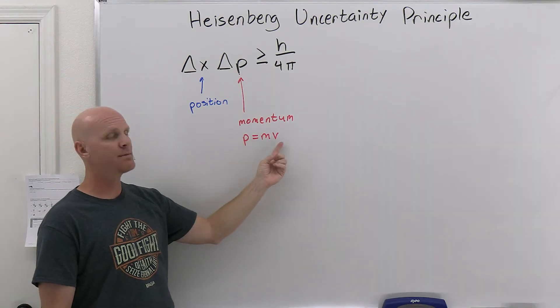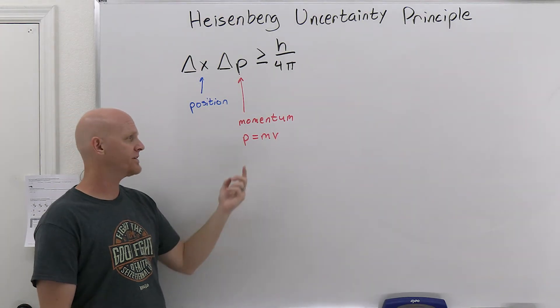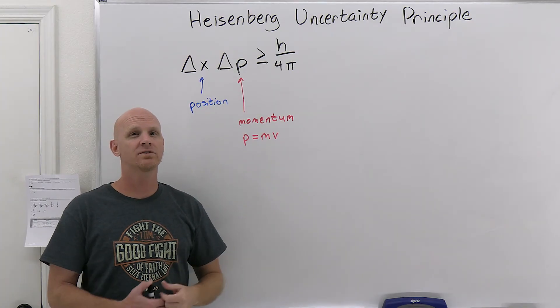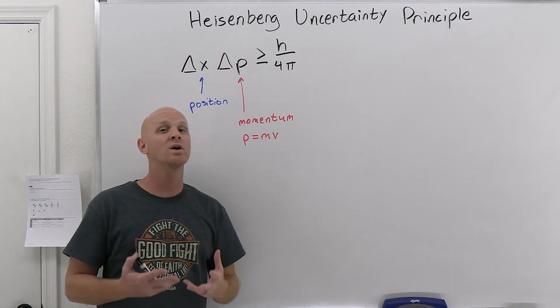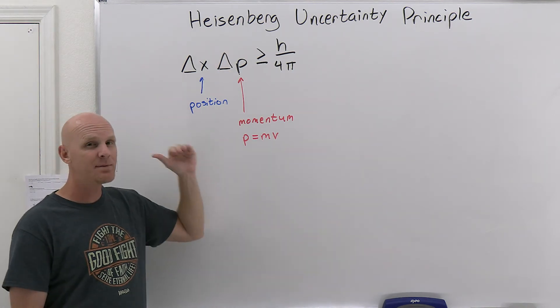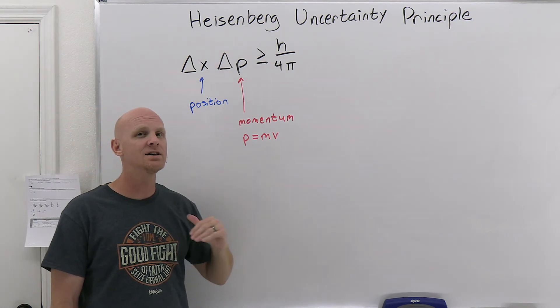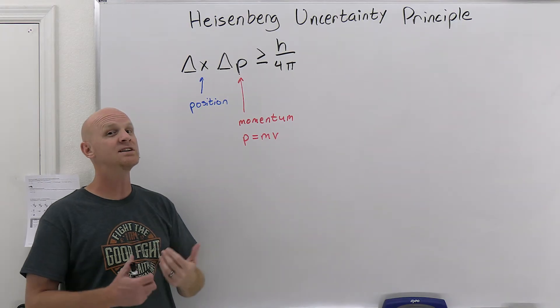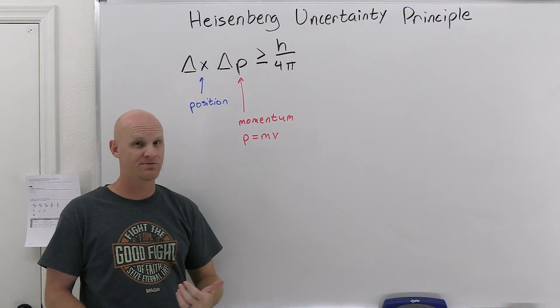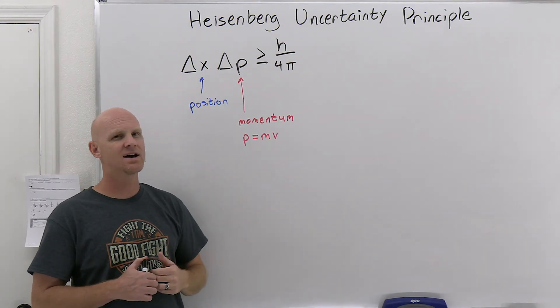And notice momentum is mass times velocity. And so the mass of an electron is not really changing, but the velocity is changing. And part of that velocity is how fast it's moving and what direction it's going. And so in this case, you can't simultaneously know with infinite precision, so infinite certainty, if you will, where an electron is and where it's going and how fast and stuff. So that's kind of what this says.